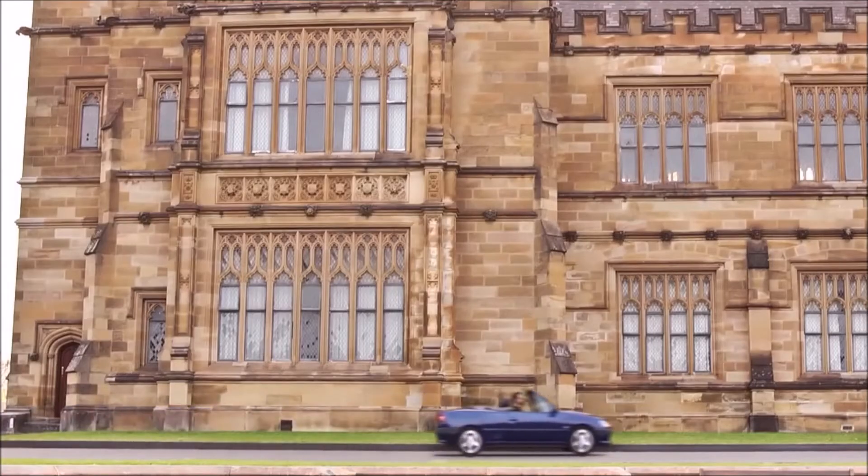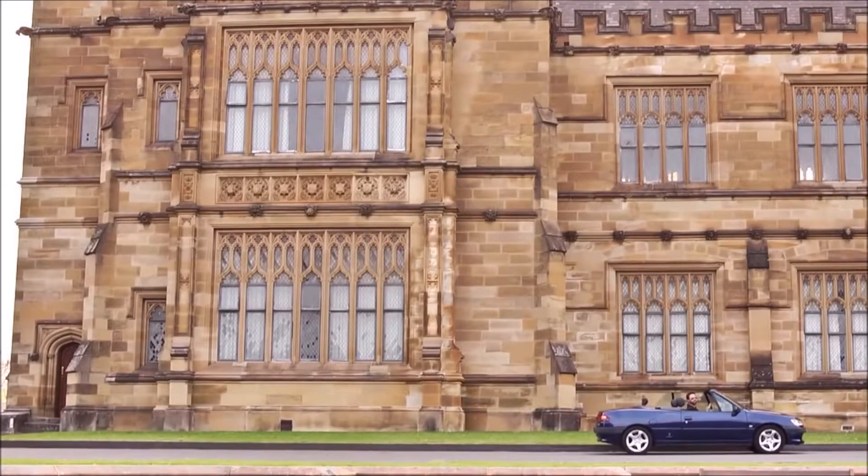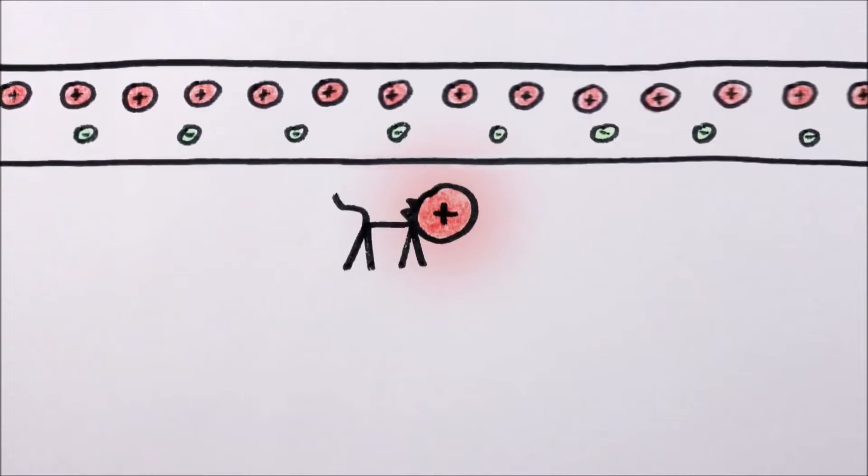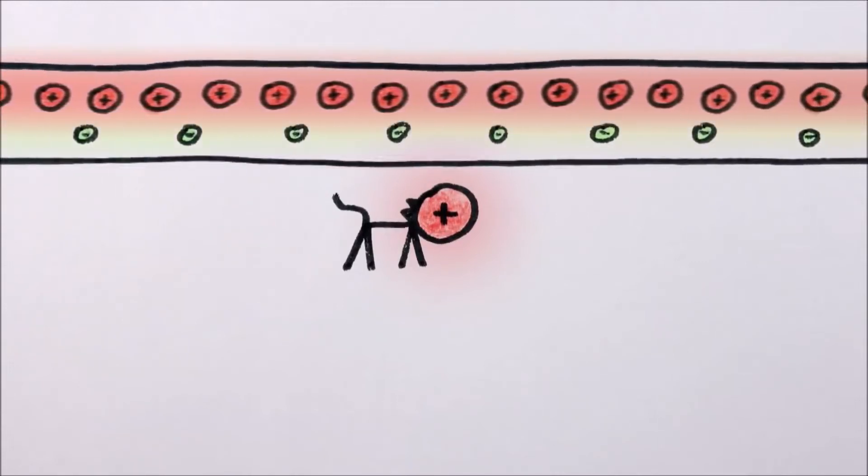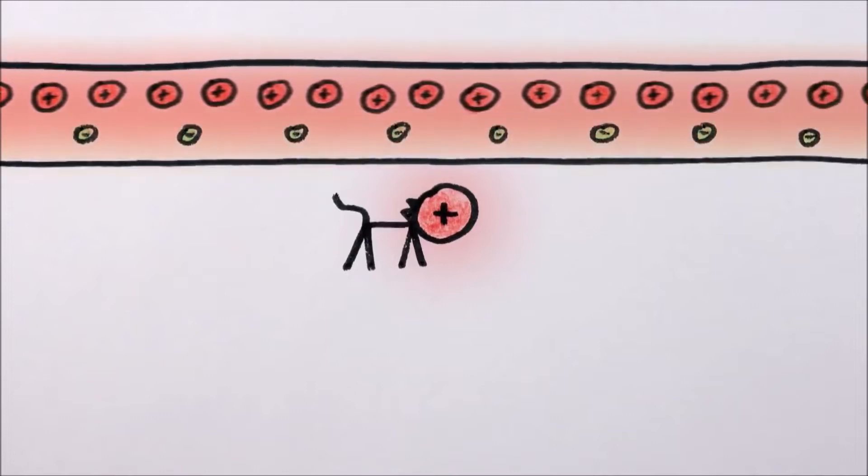Remember, objects take up more space when they're not moving than when they are. These two changes together mean there's a higher density of positive charges in the wire, so it's no longer neutral, it's positively charged.